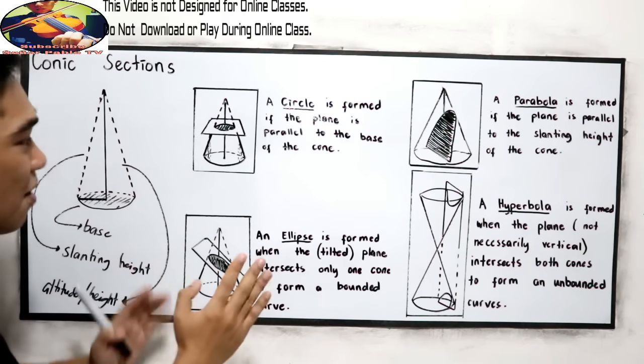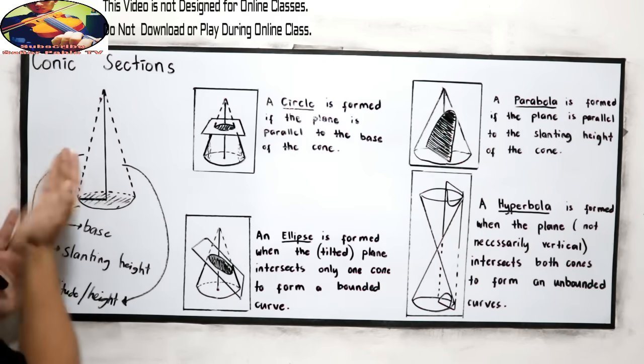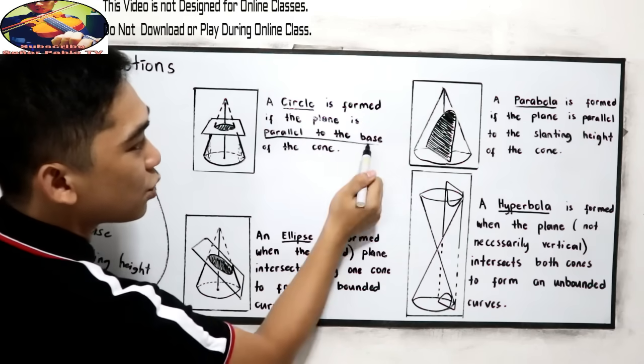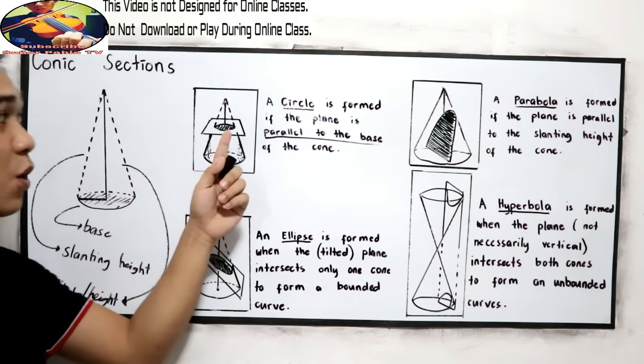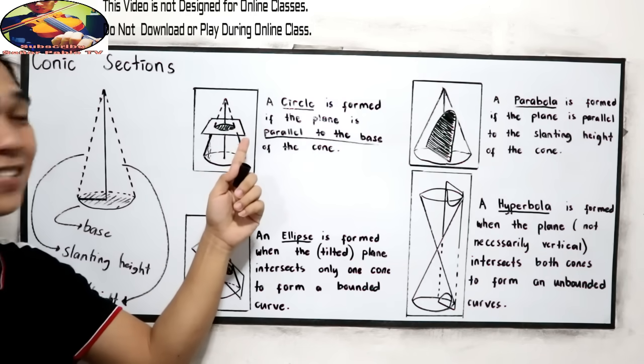For example, in our cone, if we're going to cut our cone parallel to the base, we will form a circle. That is the circle.